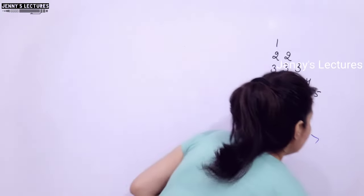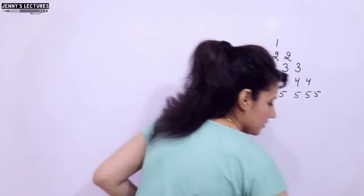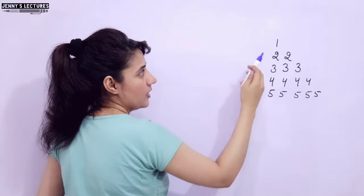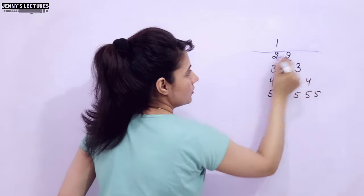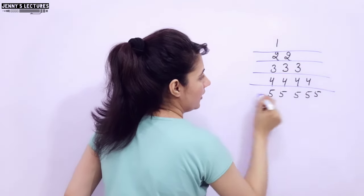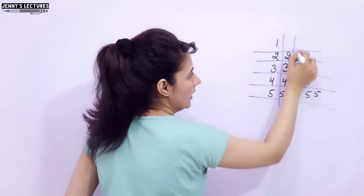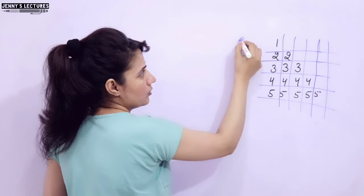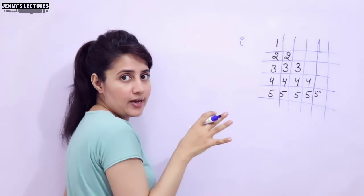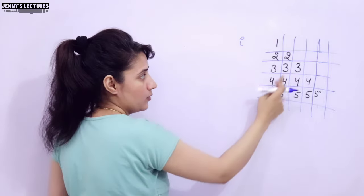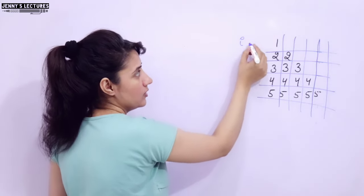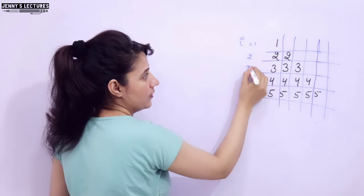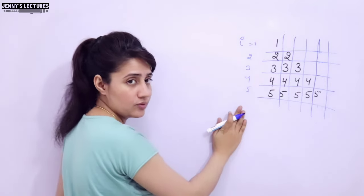So now how to print this pattern? The same thing — first, think about number of lines, or you can say number of rows. Let me divide it into number of rows and columns. For number of rows, one variable that is i, which is responsible. How many rows? 5. When i is 1, this row; then 2, then 3, then 4, then 5.